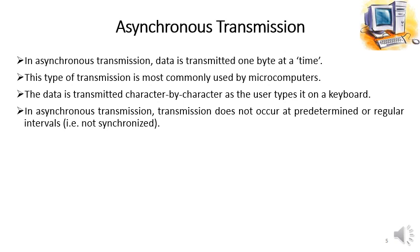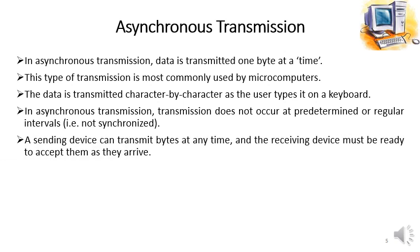In asynchronous transmission, transmission does not occur at predetermined or regular intervals — it is not synchronized. If it were synchronized, the time interval between consecutive transmitted characters would be the same. But here, the time intervals between consecutive bytes are not the same, which is why it is not synchronized. A sending device can transmit bytes at any time and the receiving device must be ready to accept them.